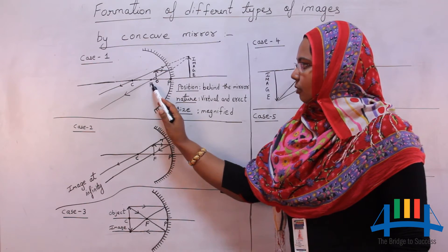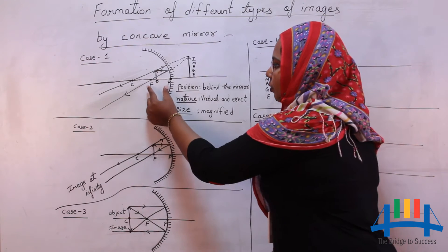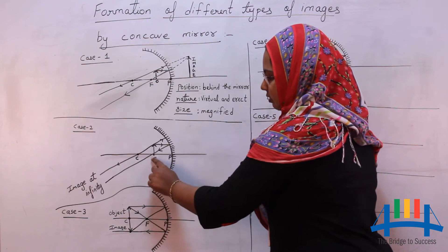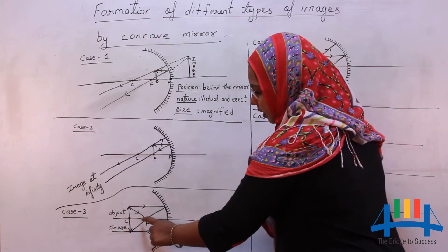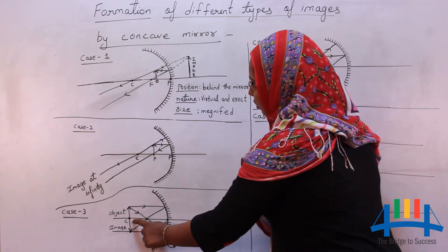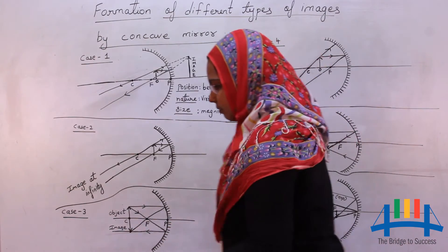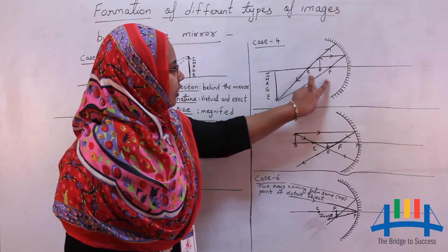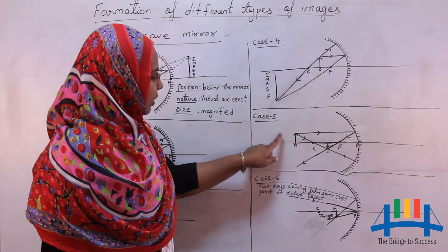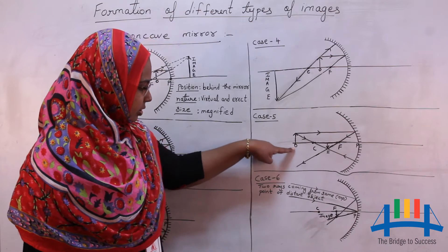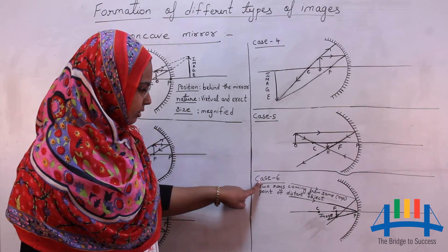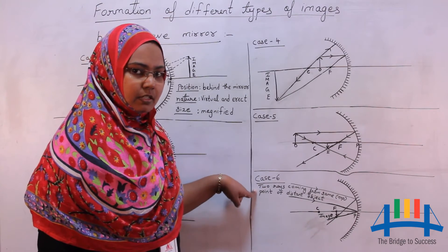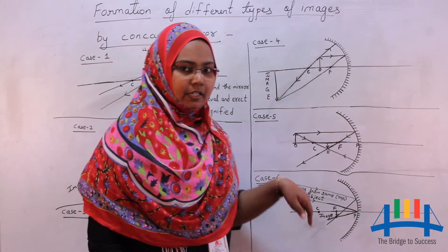We can place the object between pole and focus. The second case is at the focus. Third, we can place the object at the center of curvature. Fourth, between focus and center of curvature. Fifth is beyond center of curvature, and the sixth case is at infinity, meaning very far off distance. Let us discuss each case one by one in detail.